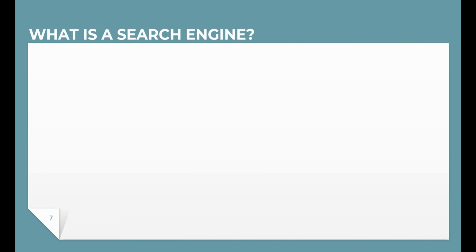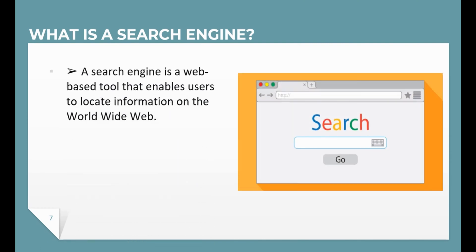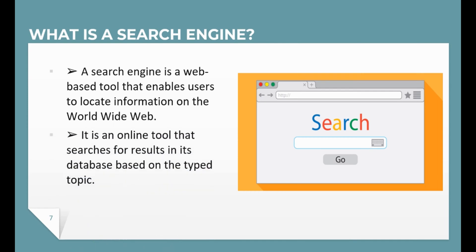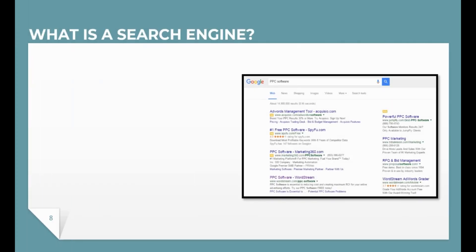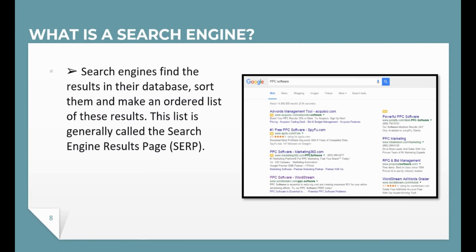What is a search engine? A search engine is a web-based tool that enables users like you to locate information on the World Wide Web. It is an online tool that searches for results in its database based on the topic. Search engines find results in their database, sort them, and make an ordered list of those results.